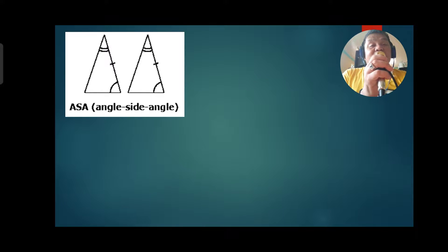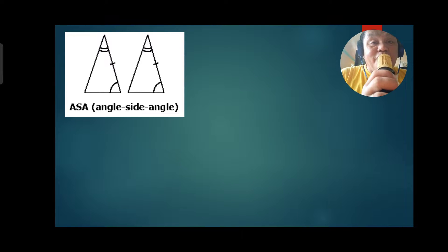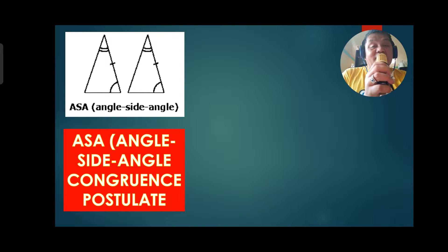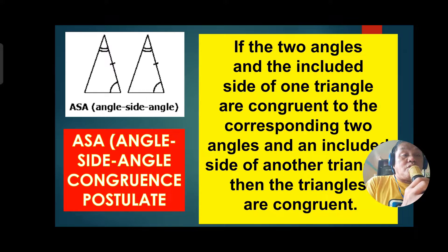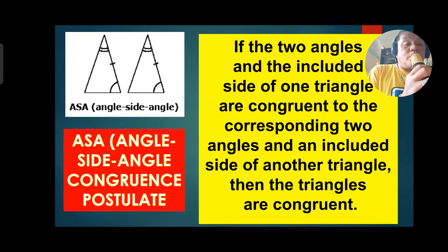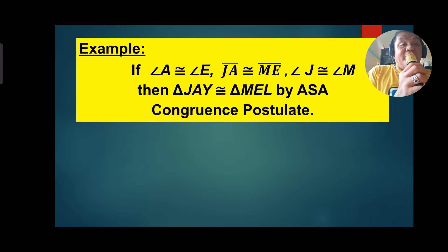The concept of the Angle Side Angle Congruence Postulate: if the two angles and the included side of one triangle are congruent to the corresponding two angles and the included side of another triangle, then the triangles are congruent. Let us have an example.